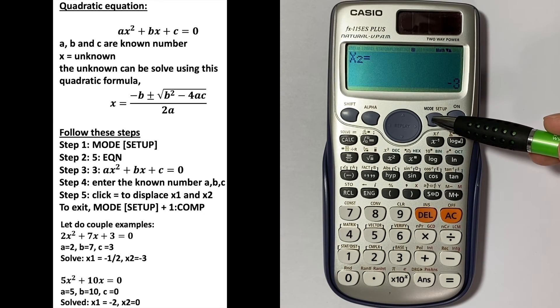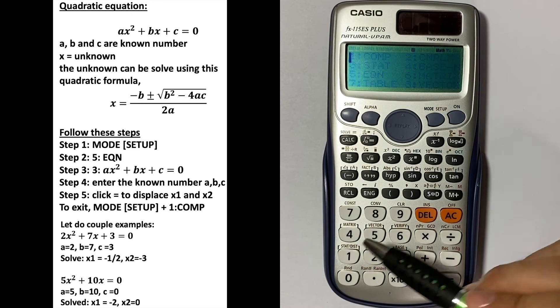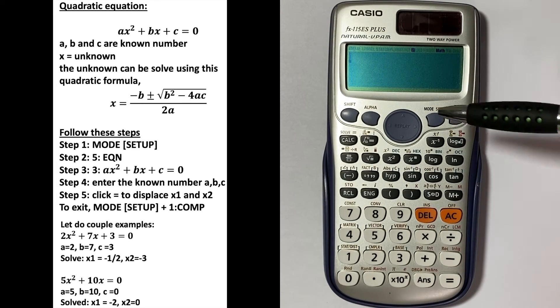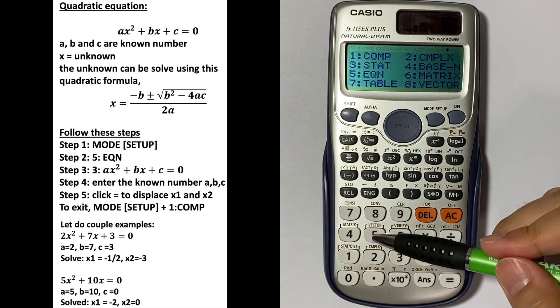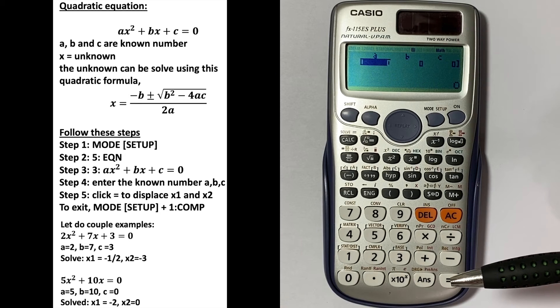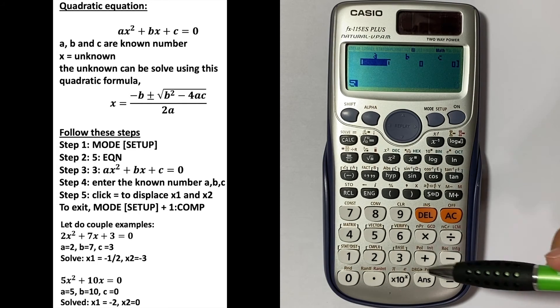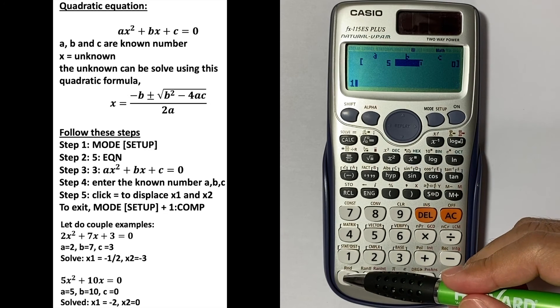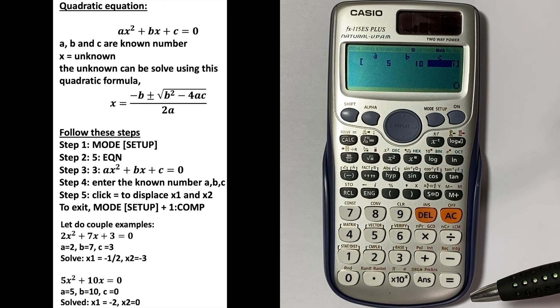When you're done, you just click mode one to exit. Let's do another example. Go to mode five, number three. And here we have 5x squared plus 10x equal to zero. So a is 5 and b is 10. And since we don't have a c here, c will be zero.